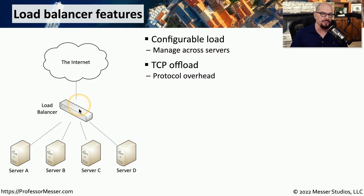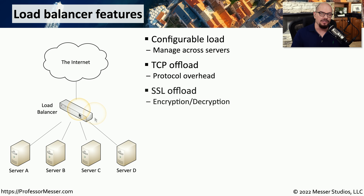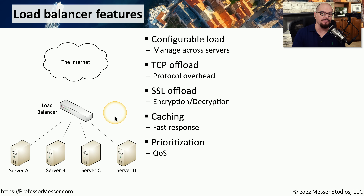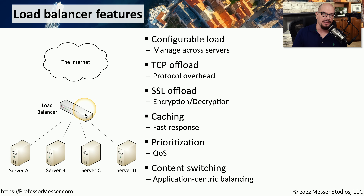Since the load balancer sits in the middle of conversations, it can also make changes to how certain protocols work. For example, it's common for a load balancer to offload TCP so that it maintains constant connections to all servers. It might also provide SSL offloading, so all encryption and decryption happens on the load balancer instead of on the servers themselves. Load balancers can also cache information so that requests from the internet may not need to reach a server at all. We can also configure content switching — certain web pages or applications can be prioritized to certain servers — allowing the load balancer to optimize communication with the servers that can respond best.